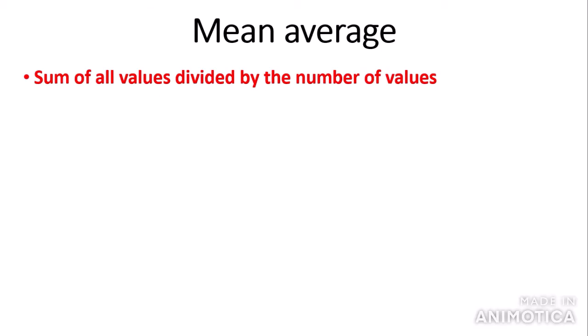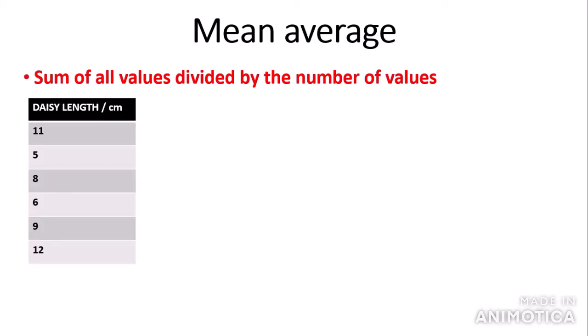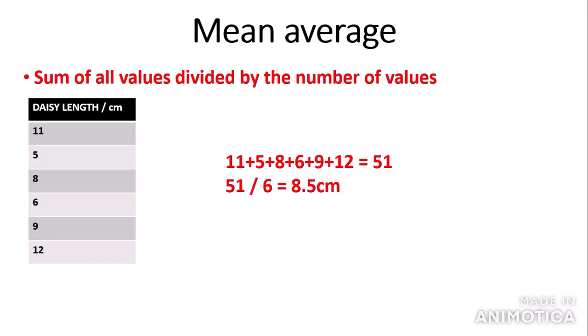So to analyse your samples, you often calculate the mean average, which you will have learnt about earlier in your education. The mean average is the sum of all values divided by the number of values. Here I have a table with some data about daisy length in centimetres with six data points. So 11 + 5 + 8 + 6 + 9 + 12 = 51, and we divide 51 by 6 to get our mean average of 8.5 centimetres.